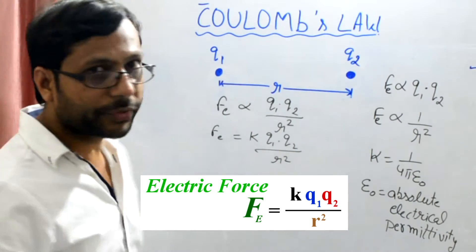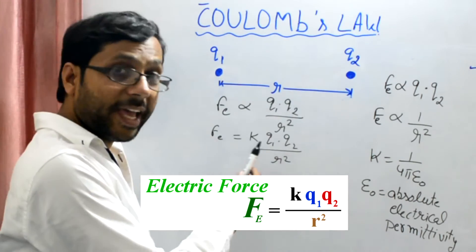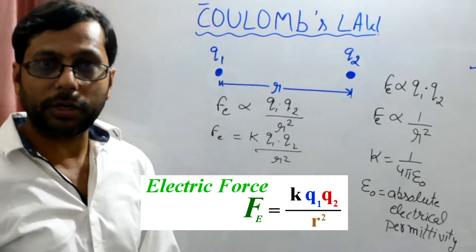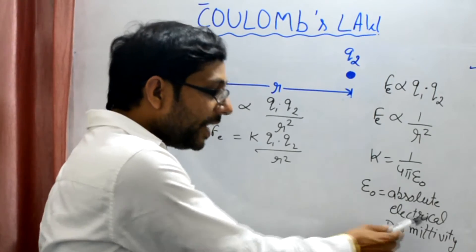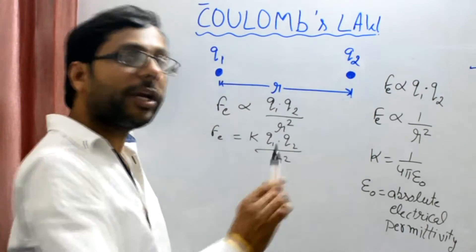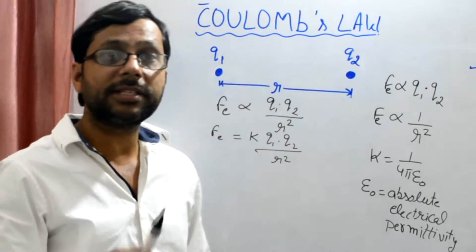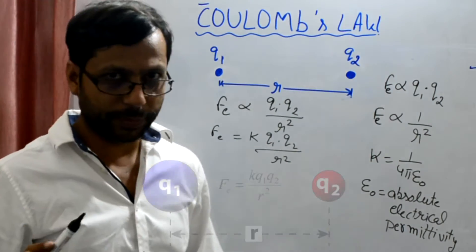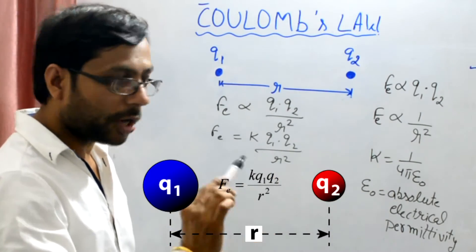The value of K is 1 upon 4 pi epsilon naught. That epsilon naught is the absolute electrical permittivity. Absolute electrical permittivity means in this case these two charges are at rest in a medium of air, or you can say it is in vacuum. That's why we use that naught here, epsilon naught.